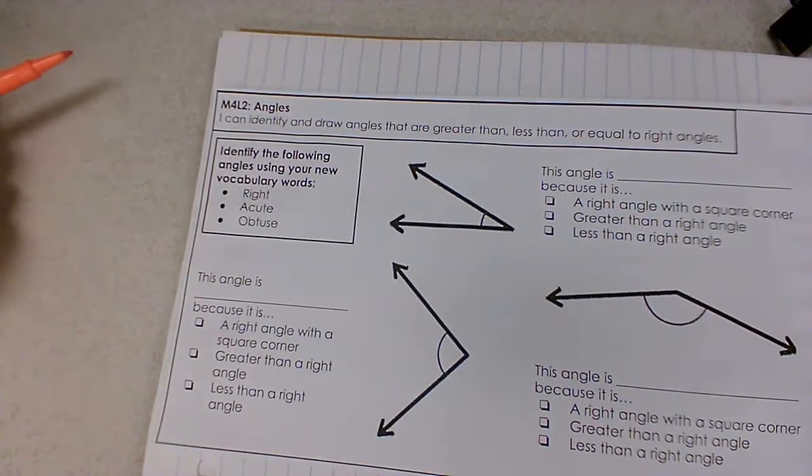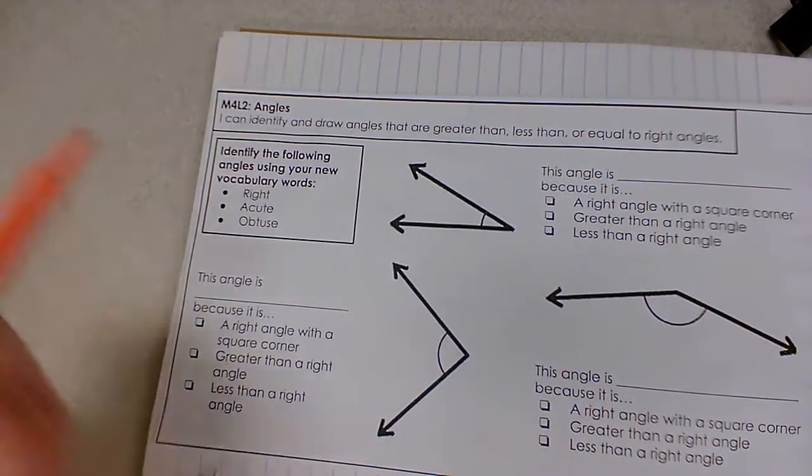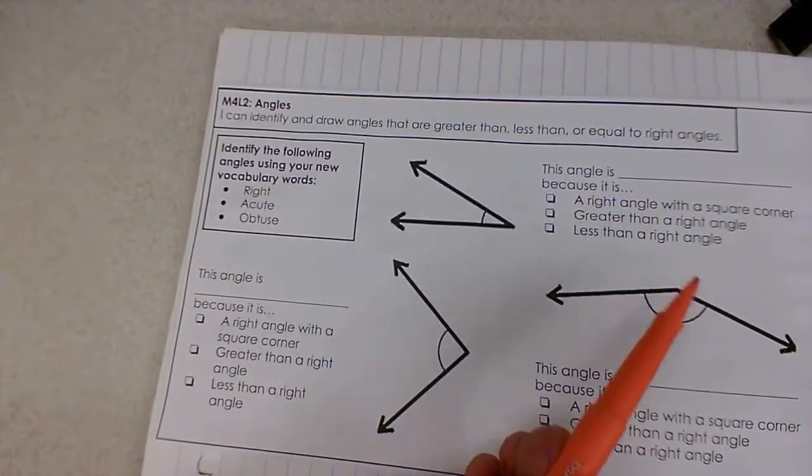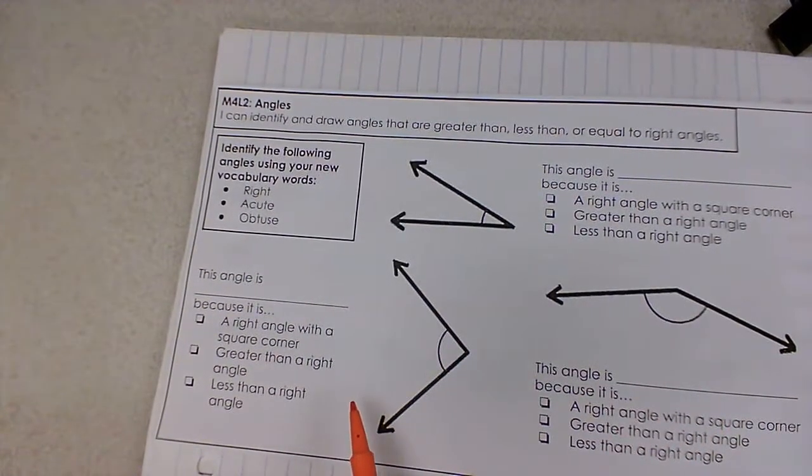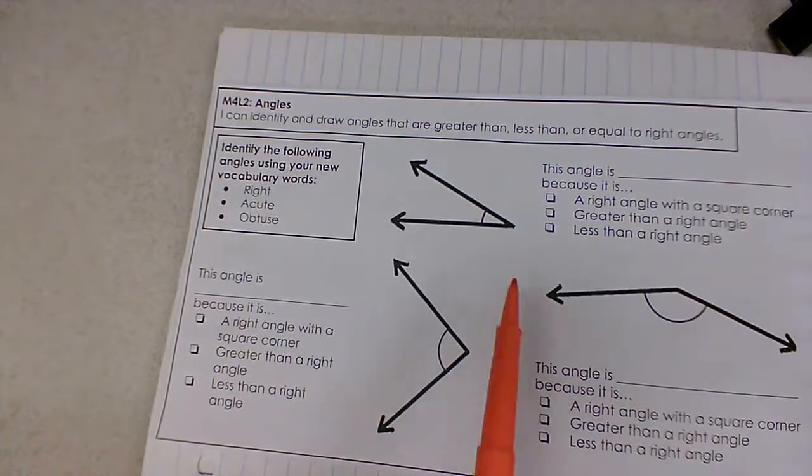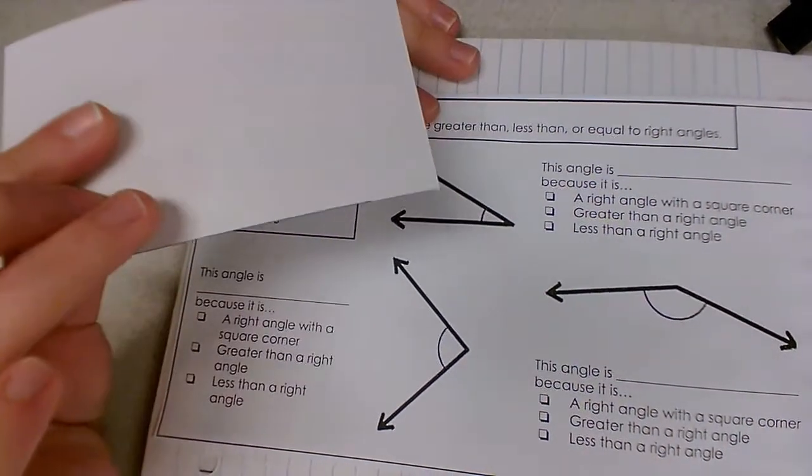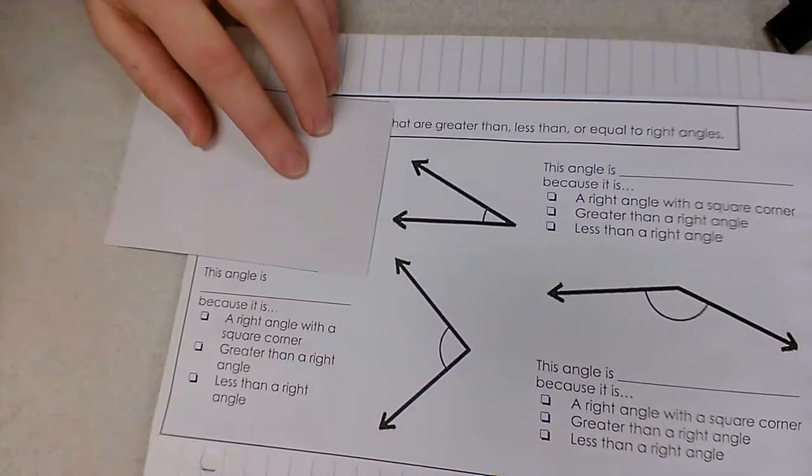Right, acute, obtuse. Now, they wanted to make it a little bit trickier for you, so you're going to notice that none of these are labeled with square corners. If one of them were labeled with square corners, we could very easily take a look at it and say, oh, that's our right angle. But since they're all labeled with semicircles, we're going to have to use other tools, like our note card with our square corner built into it.